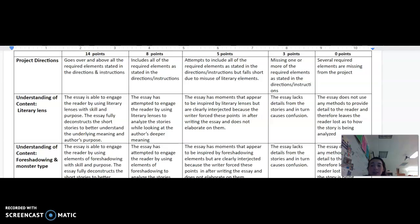5 points for attempts to include all the required elements as stated in the directions, but it falls short due to misuse of literary elements. 3 points, missing one or more of the required elements as stated in the directions. And 0 points because several required elements are missing from the project.